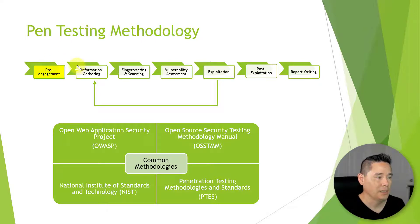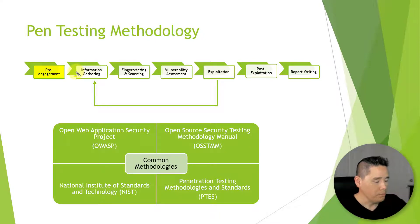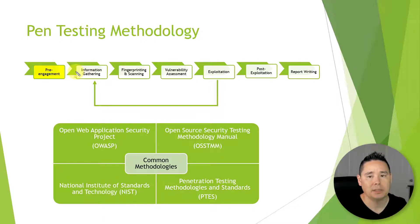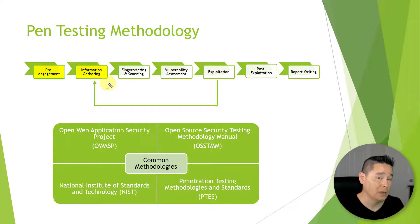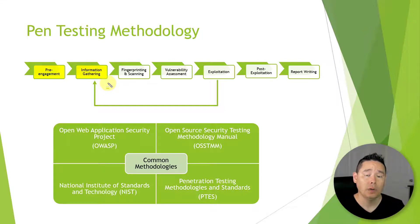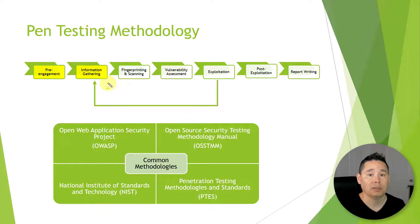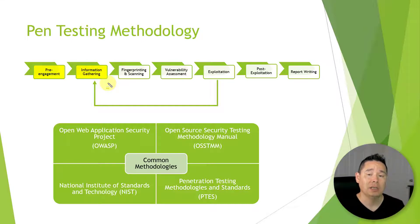The next phase is information gathering, and we can think of this as passive reconnaissance, where we're looking to find out as much as we can about an organization. If it's not a white box pen test, they don't give us a lot of details, so we have to learn about the organization ourselves — maybe we go out to Google, read brochures, whatever is available to learn about the organization, the people within it, and potentially their network.